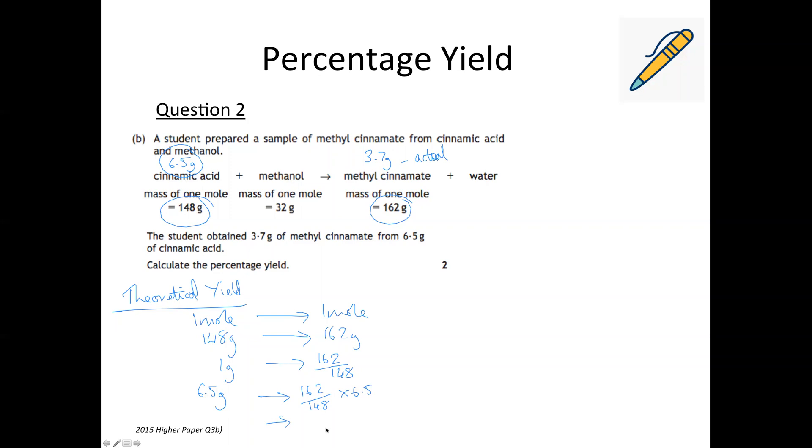So it would be 162 over 148 times 6.5, which gives 7.11 grams to two decimal places. Now we've got the theoretical yield we can use the percentage yield equation.